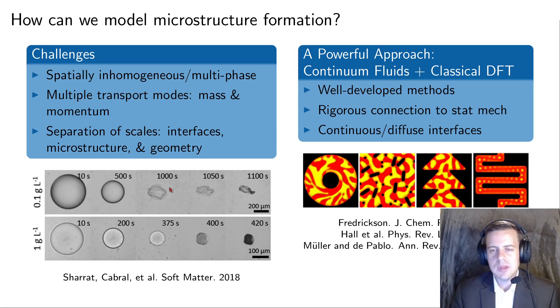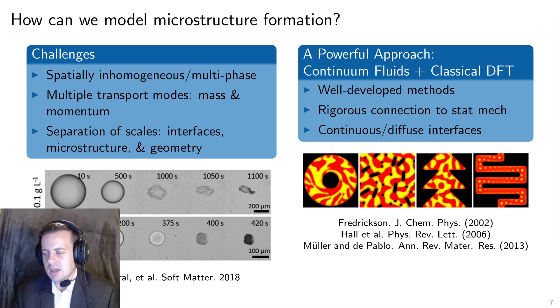We think a particularly powerful approach to going about looking at this is to use continuum fluid mechanics and transport phenomena married with what's called classical density functional theory or polymer field theory methods. They're well-developed methods. They have rigorous connections to theory and to statistical mechanics. From a numerical standpoint, they'll allow you to overcome the fact that you have multiple phases by having diffuse interfaces, so continuous interfaces between the two phases. There's this nice review by Marcus Mueller and Juan de Pablo that came out a few years ago.